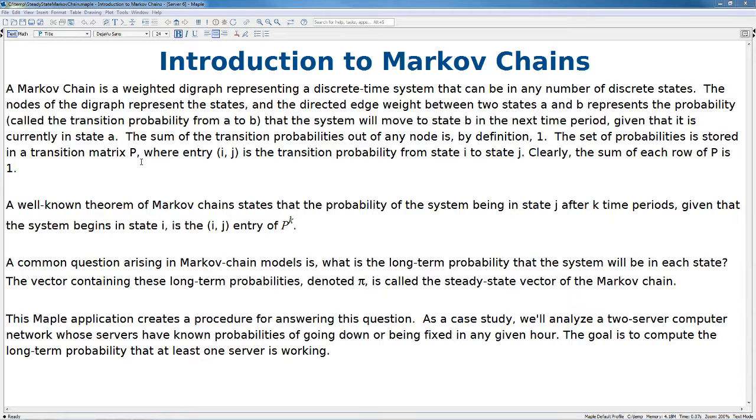A common question arising in Markov chain models is, what is the long-term probability that the system will be in each state? The vector containing these long-term probabilities, denoted pi, is called the steady state vector of the Markov chain.